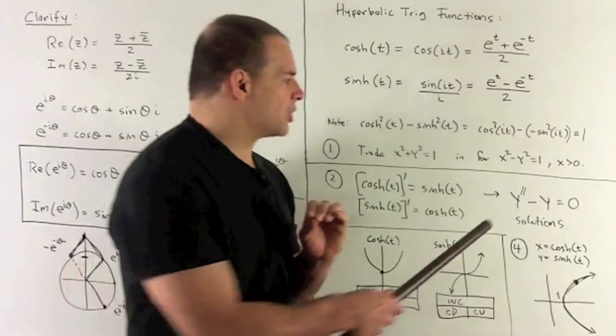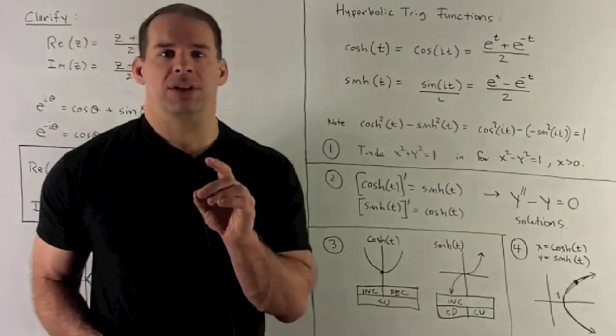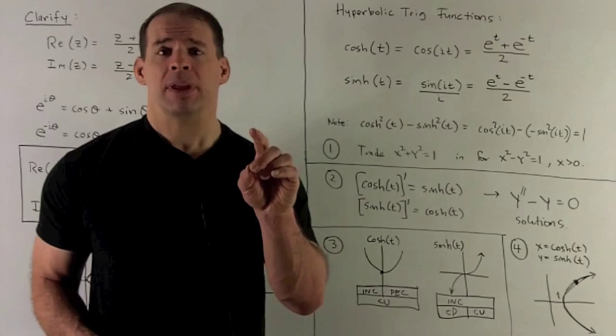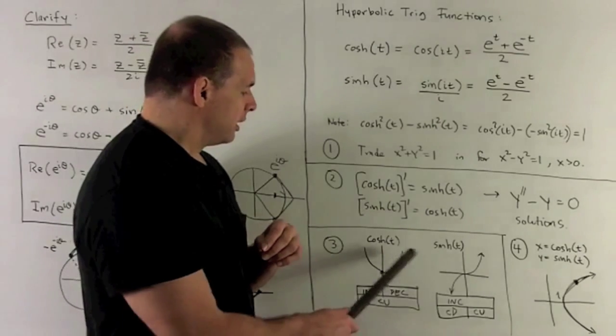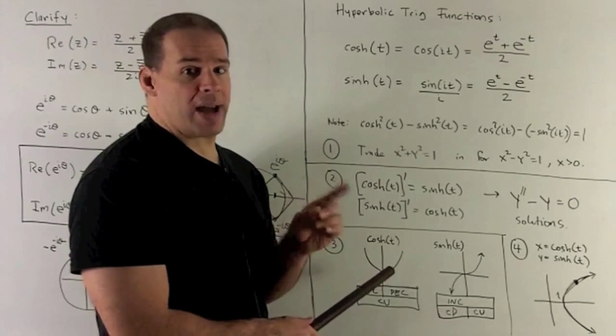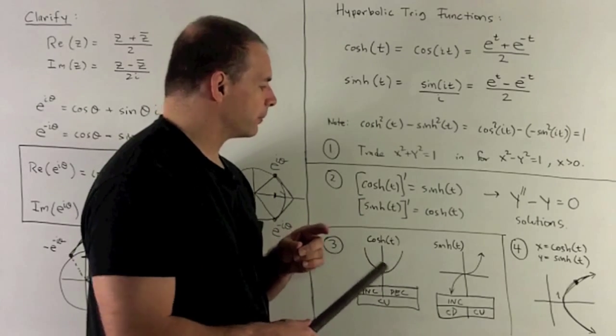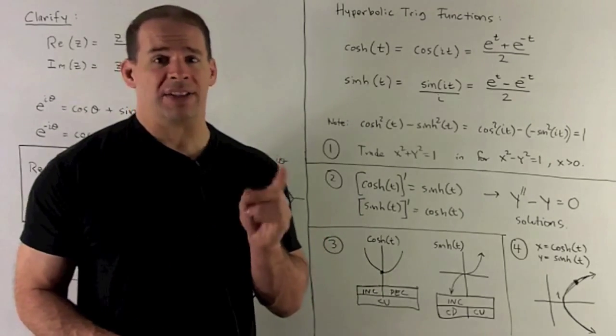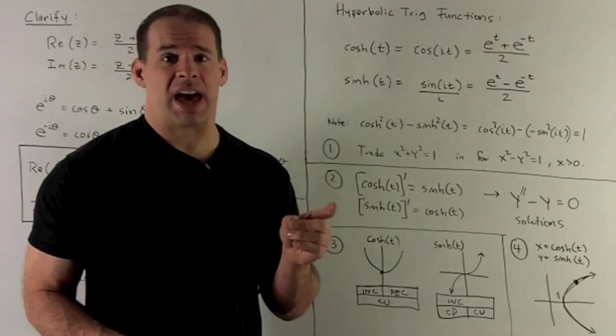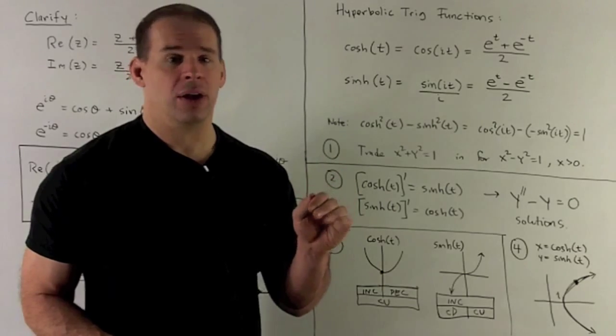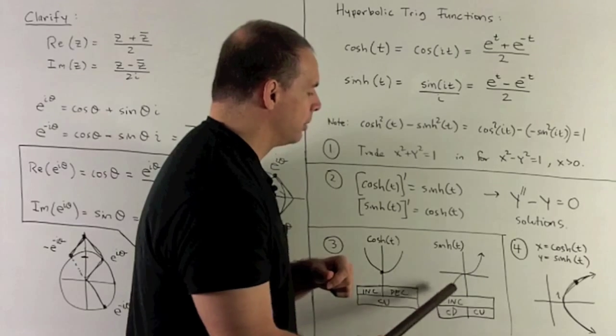One thing worth noting about these two graphs: we have the differential equation Y double prime equals Y. That means if you look at the sign of the function, that's going to be the same as the sign of the concavity, meaning if I'm above the X-axis where Y is positive, I have to be concave up. That's definitely the case for cosh. If Y is negative, meaning under the X-axis, concavity is going to have a negative sign, which means we're concave down. You'll note here we're concave up and above the axis, here we're concave down below the axis.